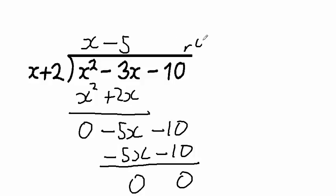So this time the remainder is 0, and x minus 5 is a perfect divisor. And that's all there is to it, really.